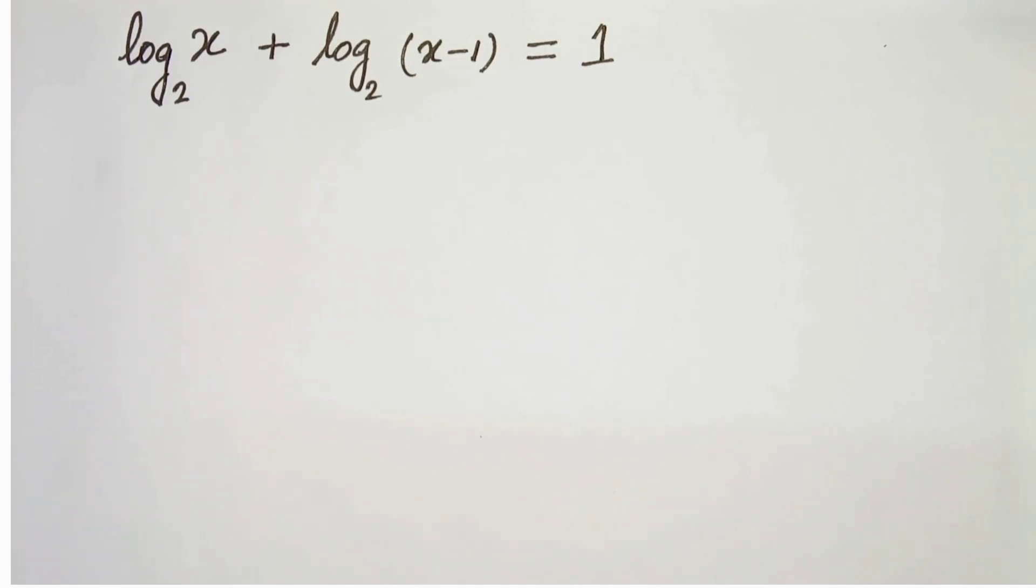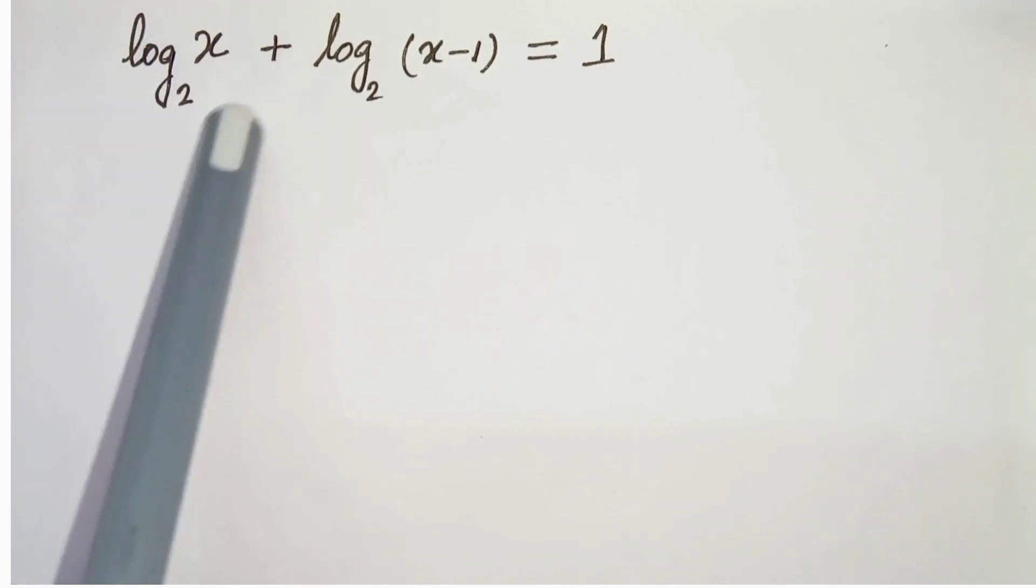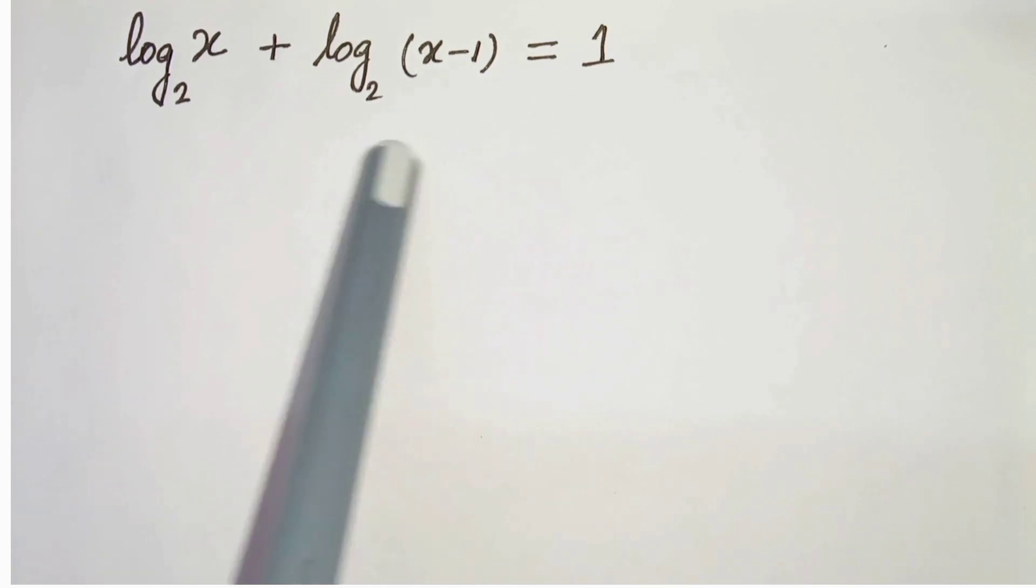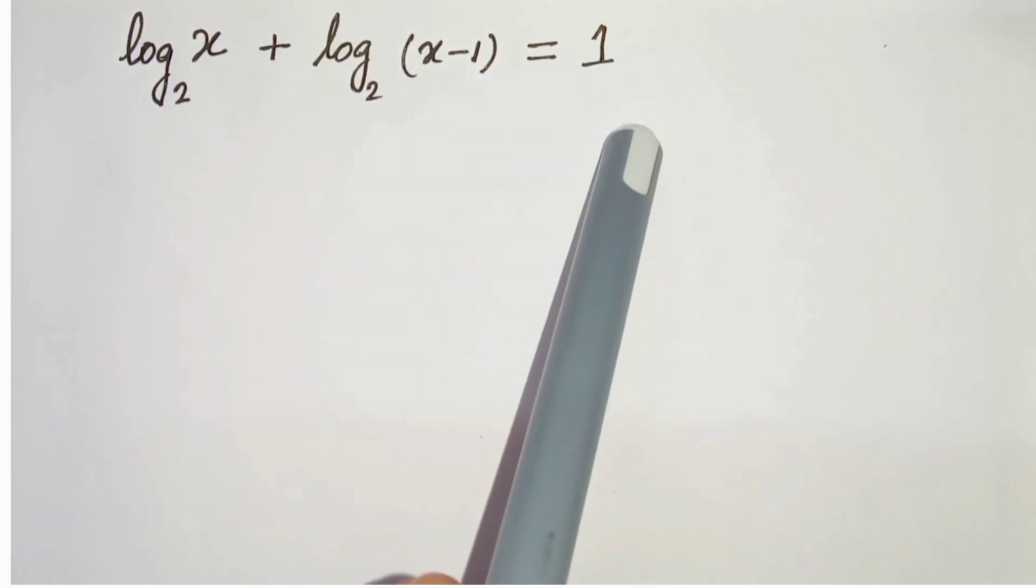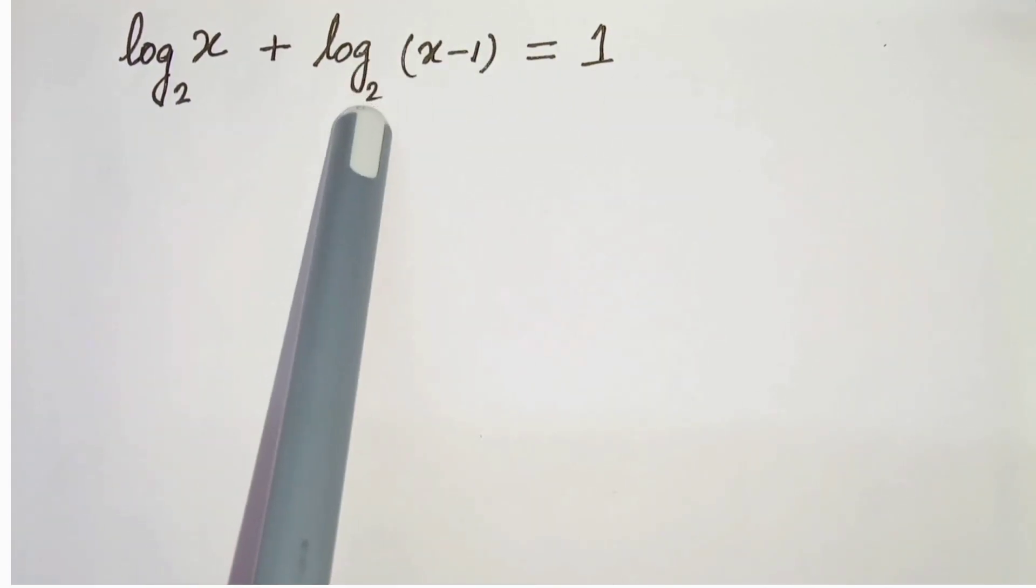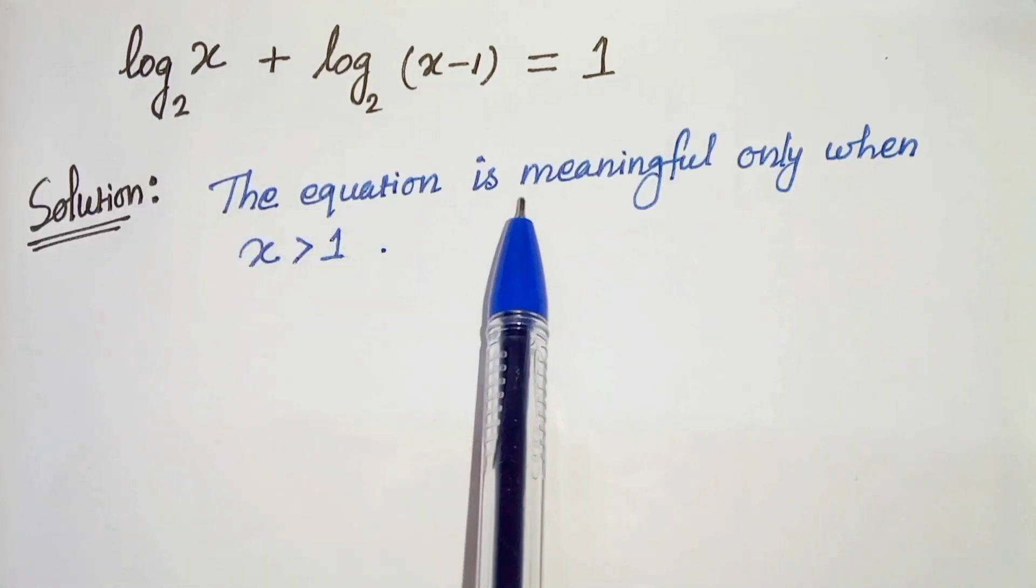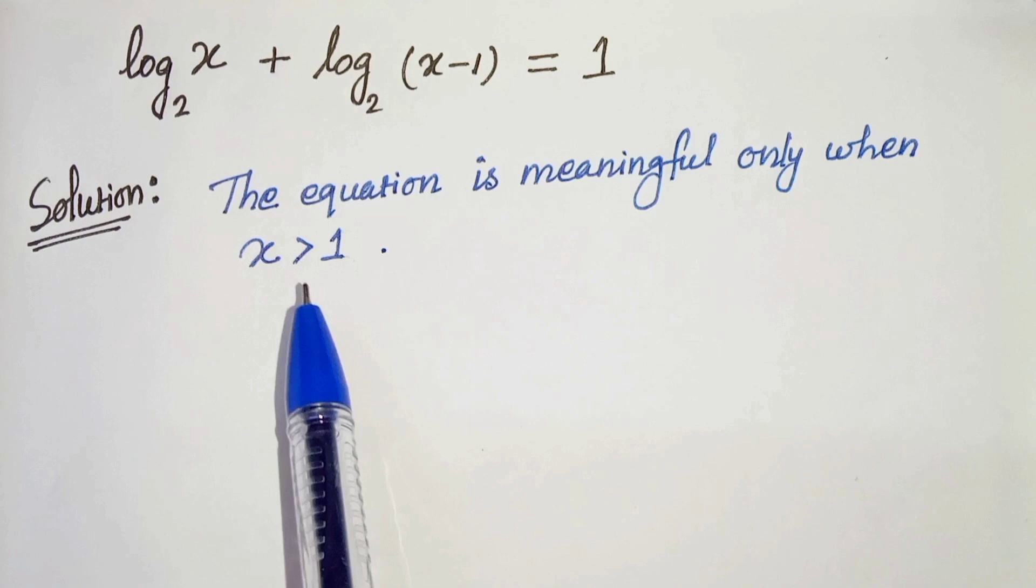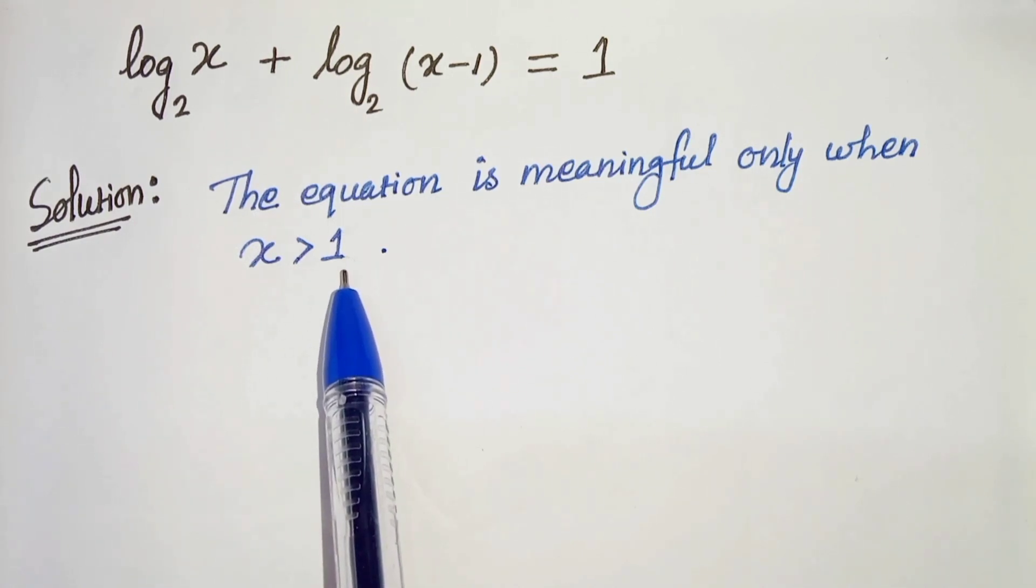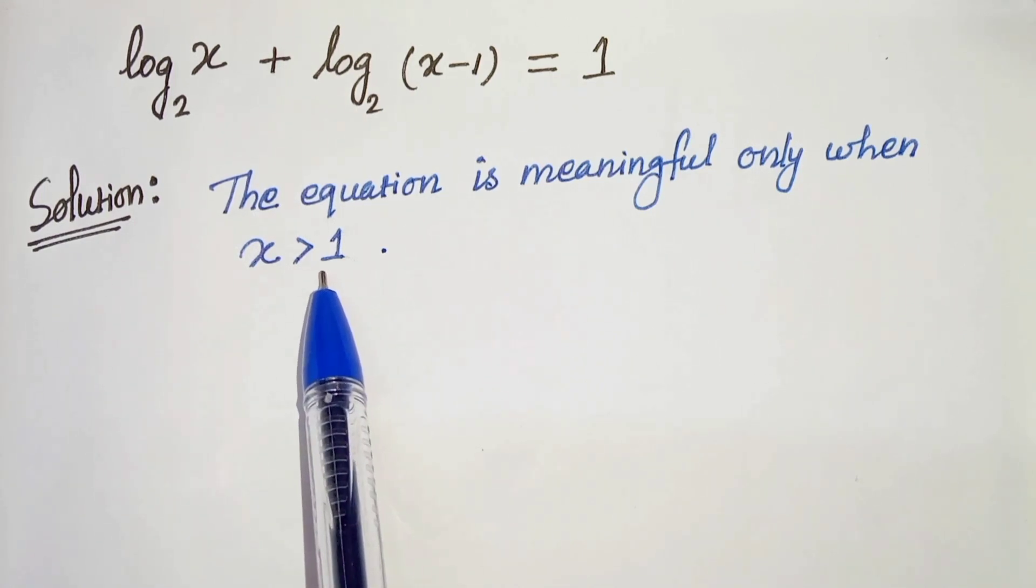Hello everyone, in this video we have log x to the base 2 plus log x minus 1 to the base 2 equals to 1. We have to solve this and find the value of x, so let's start. The equation is meaningful only when x is greater than 1, because if we take any value which is less than 1 or equals to 1, then the log of this part would be undefined.